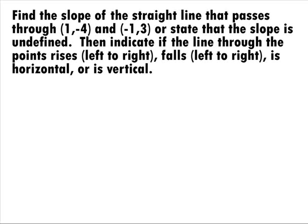In this example, we want to find the slope of the straight line that passes through the points (1, -4) and (-1, 3) or state that the slope is undefined. Then we need to indicate if the line through the points rises left to right, falls left to right, is horizontal, or is vertical.